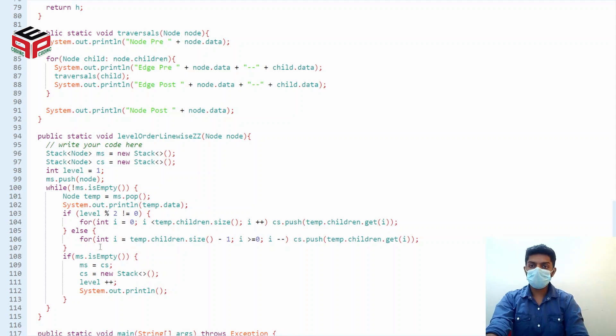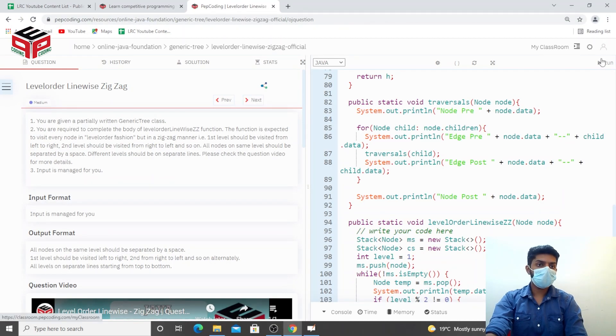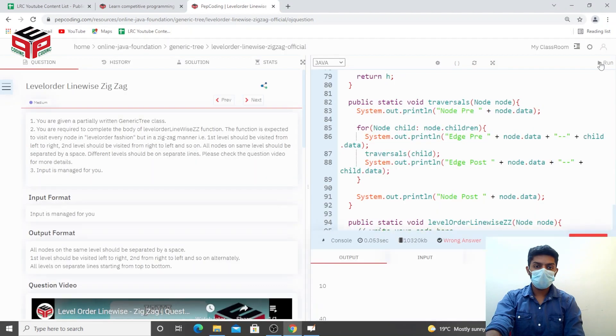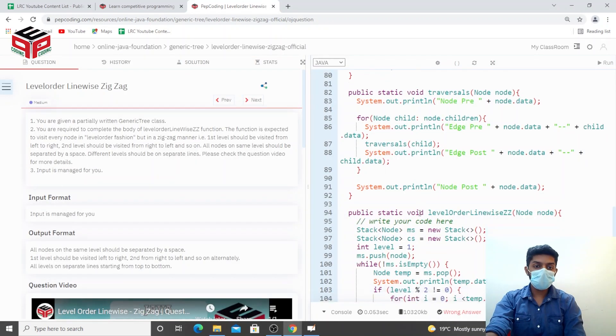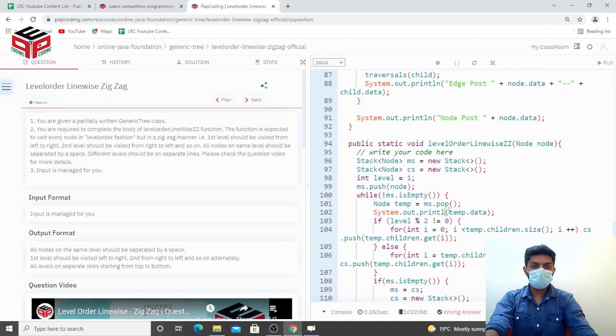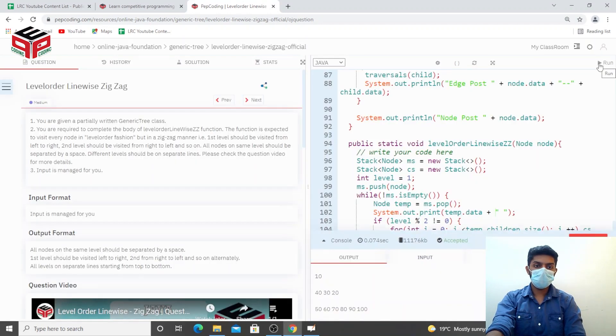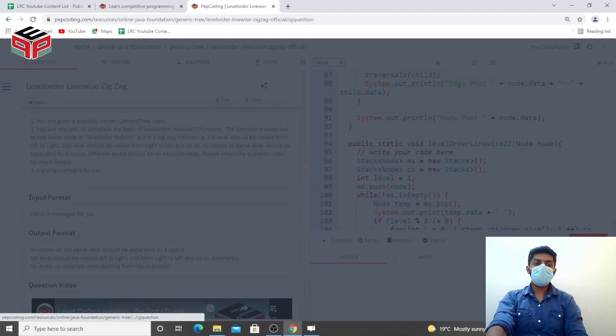So I hope this will be running except for a few typos I have made. Okay, it should not be println, it should be print, because the nodes of one level are to be printed in the same line. Let's try to run it now. Okay, it's getting accepted. Let's try to submit it.